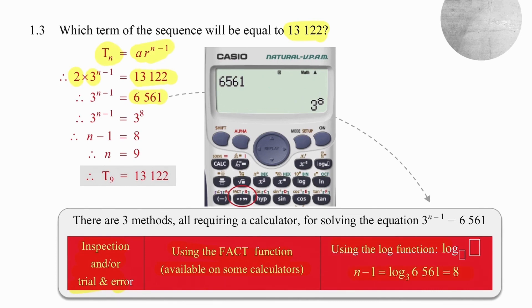The most efficient method with the most general application would be to use logs. So if you use your log function which is on the right near the top you simply put the base in and the value in and the calculator will give you this outcome of eight. You solve the equation and now you know that the ninth term has a value of 13,122.